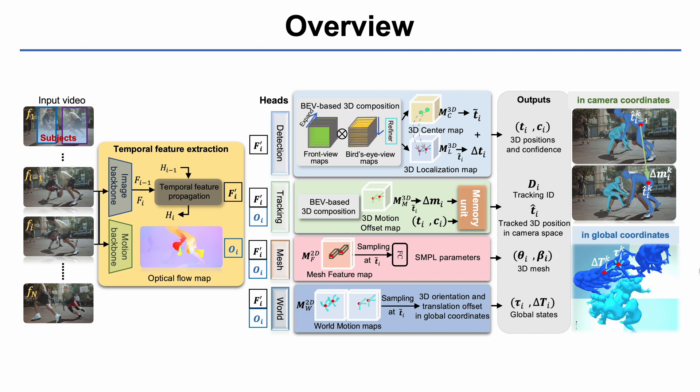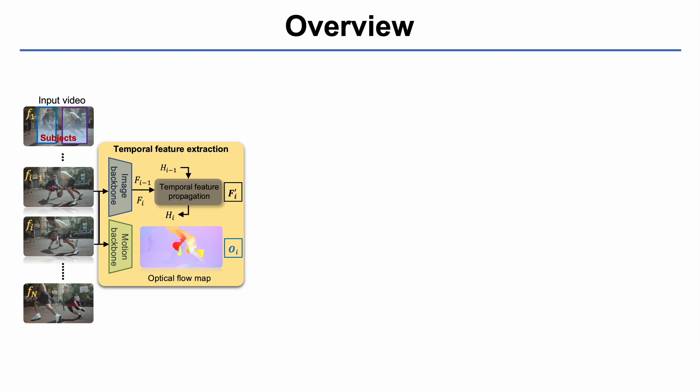To address these problems, TRACE first extracts temporal features and then decodes each subtask with a separate head network. Via two parallel backbones, TRACE encodes the video and its motion into temporal image feature maps and motion feature maps.